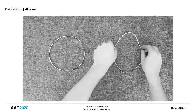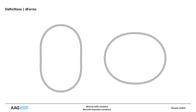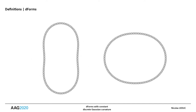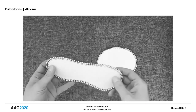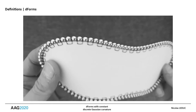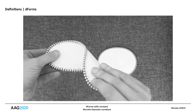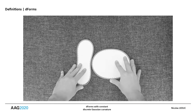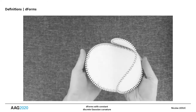The D-forms are composed of two topological disks of equal perimeters. These two disks can be identical or of different shapes. The two perimeters are then associated from two initial points. The result is different for each pair of initial points.